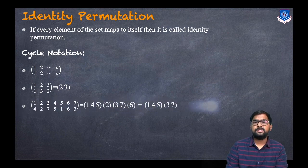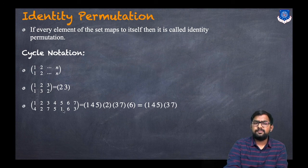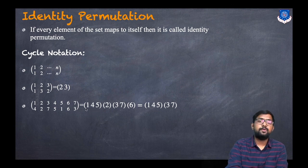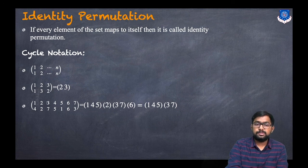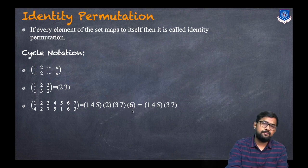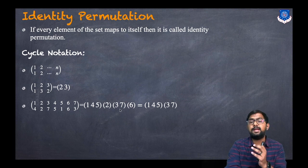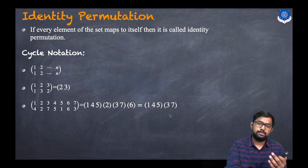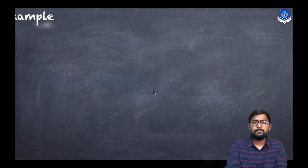Consider the permutation (1 4 / 2 2 / 3 7 / 4 5 / 5 1 / 6 6 / 7 3). To write in cycle notation: 1 goes to 4, 4 goes to 5, 5 goes to 1 — so the cycle (1 4 5) is completed. Then 2 goes to 2, so just write (2). Next, 3 goes to 7 and 7 goes to 3 — cycle (3 7). And 6 goes to 6. The final answer is (1 4 5)(3 7), omitting 2 and 6 since they map to themselves.